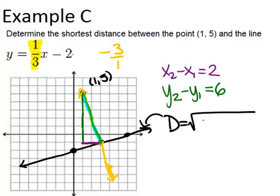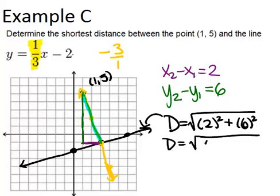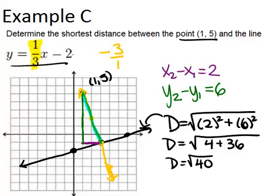So my x2 minus x1 is 2, so I'm going to do 2 squared plus 6 squared. And I can keep going to figure out my answer. I get the square root of 4 plus 36, which is the square root of 40. So the distance, the shortest distance between this point and this line is the square root of 40. And that's the distance of this shaded line right here.